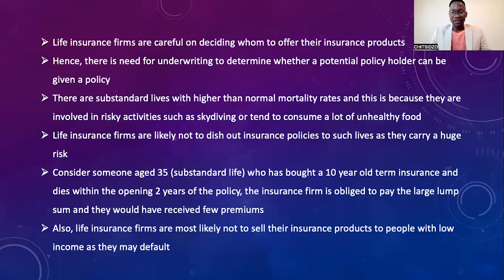Life insurance firms and other insurance firms are careful about deciding whom to offer their insurance products to. Hence, there is a need for underwriting to determine whether a potential policy holder can be given a policy or not. There are substandard lives with higher than normal mortality rates because they are involved in risky activities such as skydiving or they tend to consume a lot of unhealthy food. Life insurance firms are likely not to issue insurance policies to such lives as they carry a huge risk.